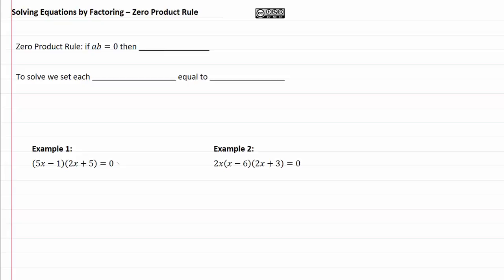Solving equations by factoring: the zero product rule. The zero product rule simply says that if we have two things times each other and it equals zero, then either a has to equal zero or b equals zero. One or the other has to equal zero.